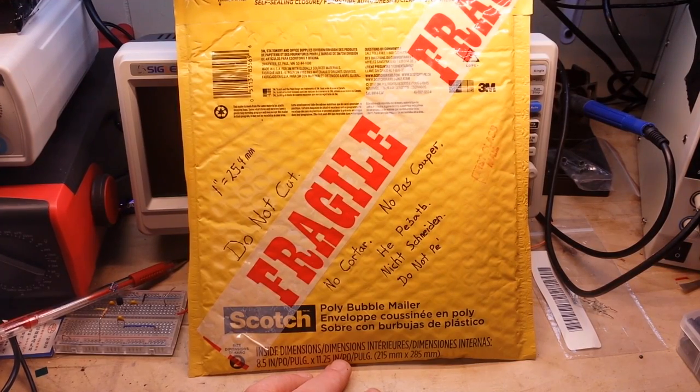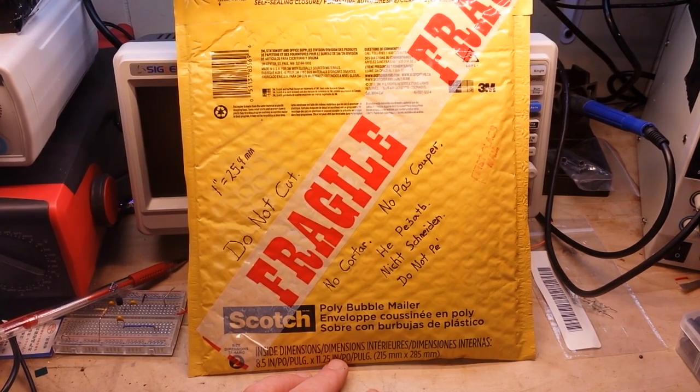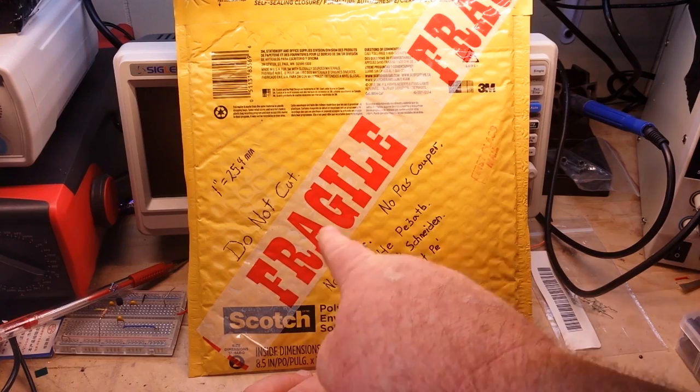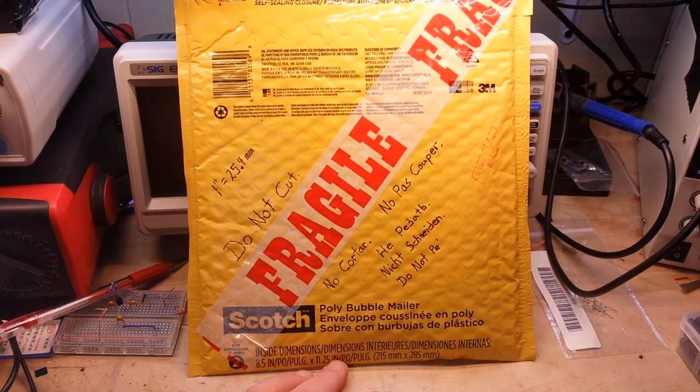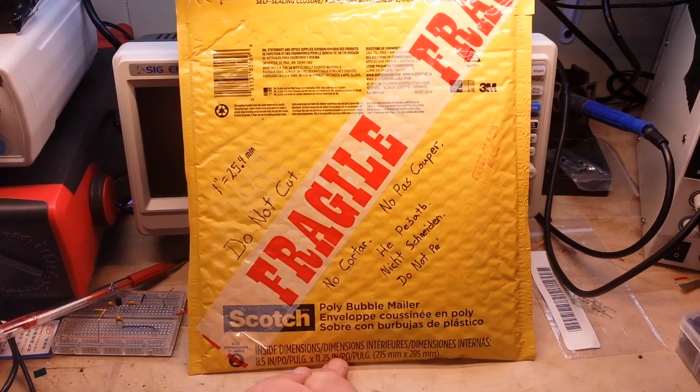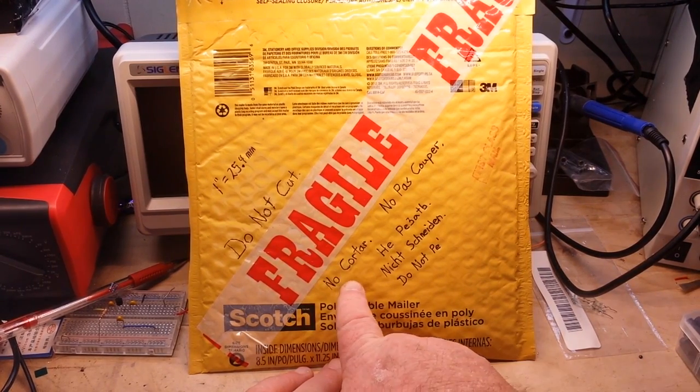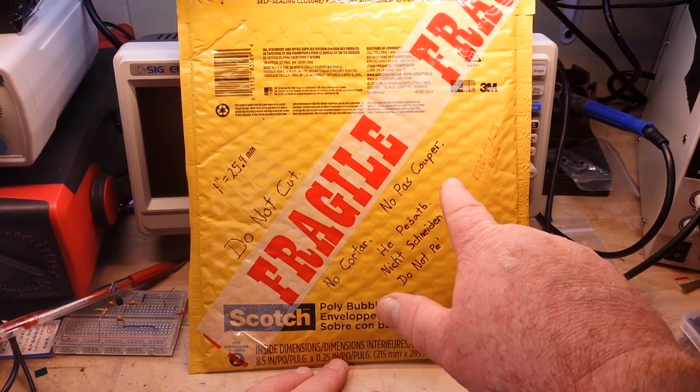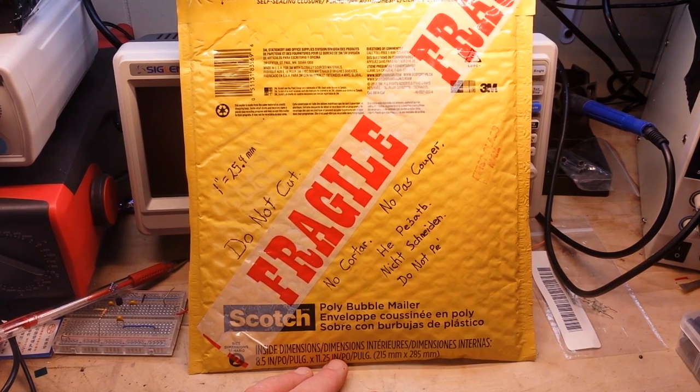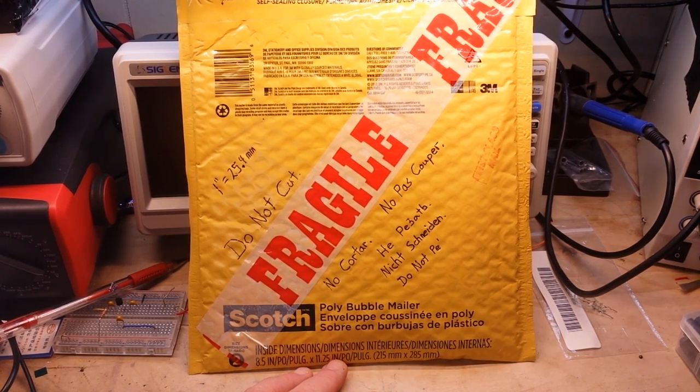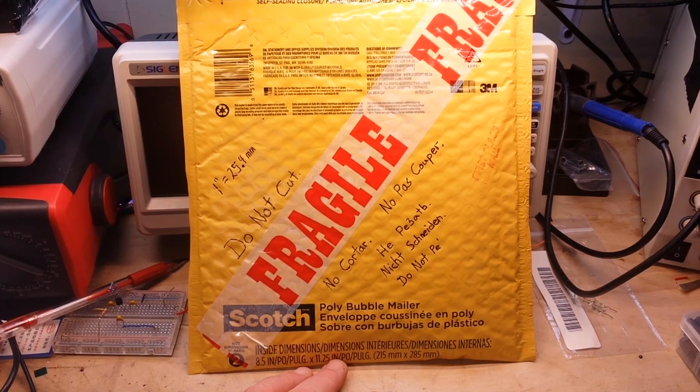Hey, what's happening guys? We got a package in the mail and it says fragile. I think that means it's from Italy, and it says do not cut, no cortar, no pass cooper - I don't know how to pronounce that. I'm guessing that's Cyrillic, so that's probably in Russian.